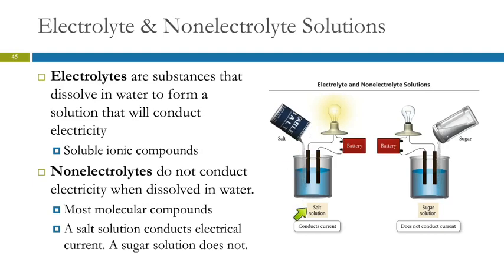Here we have a conductivity apparatus: a battery attached to a light bulb, with two wires placed in a beaker of water. In distilled or deionized water, the light bulb will not glow. If we pour in some table salt and stir it up, those ions allow electrical charge to move from one wire to the other, and the light bulb glows. If we put sugar in the water — it dissolves — but the light bulb won't glow, because sugar has molecules instead of ions, and molecules don't have charges, so it cannot conduct electricity. Non-electrolytes do not conduct electricity when dissolved in water. Sugar is a non-electrolyte; most molecular compounds are non-electrolytes.